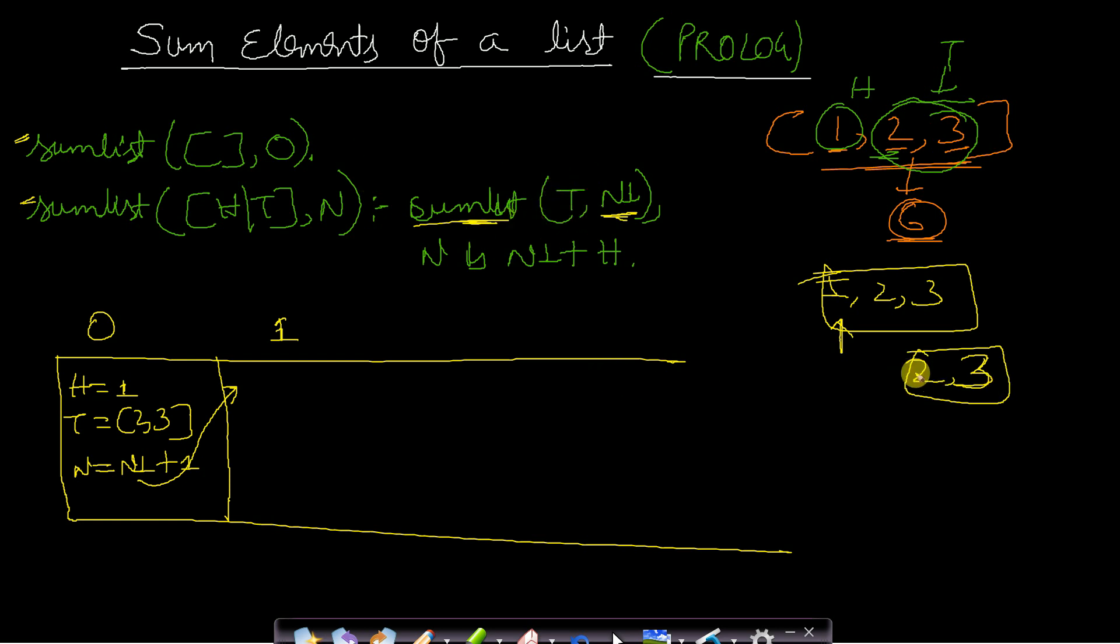Our list will be reduced to [2,3]. In this case, head will be 2 and tail will contain just one element, which is 3. The sum n will be whatever the sum of the tail is, added with the head element. Head is 2 here, so I will add 2.